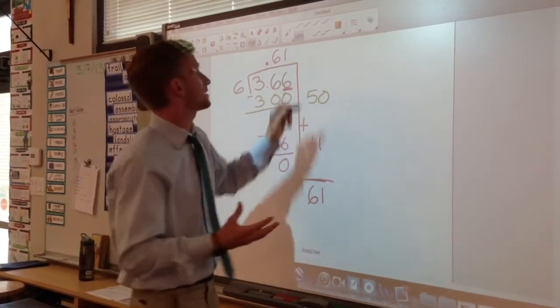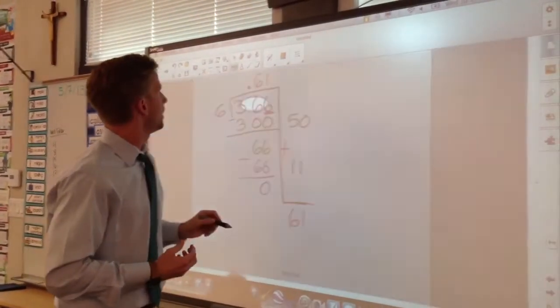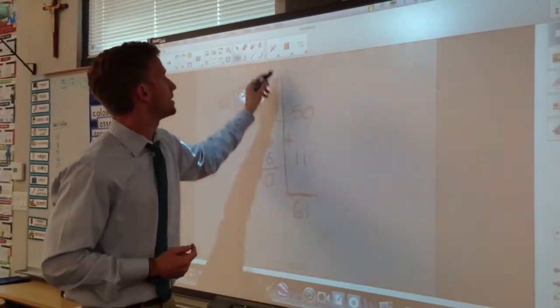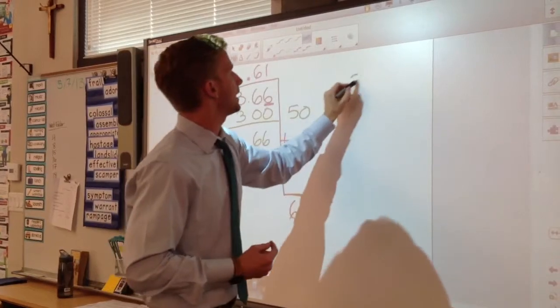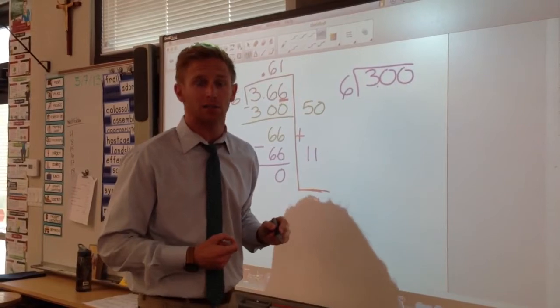We can think about it using estimation. We can say, Mr. Heck, that's an ugly number. 3.66 is an ugly number. Instead, let's round that to $3 and divide it amongst our 6 best students.